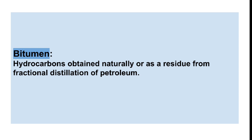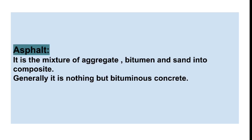Bitumen is nothing but a hydrocarbon obtained naturally or as a residue from fractional distillation of petroleum. If we fractionally distillate the petroleum, we get gasoline, naphtha, petrol, diesel, kerosene, and the final product is nothing but bitumen.